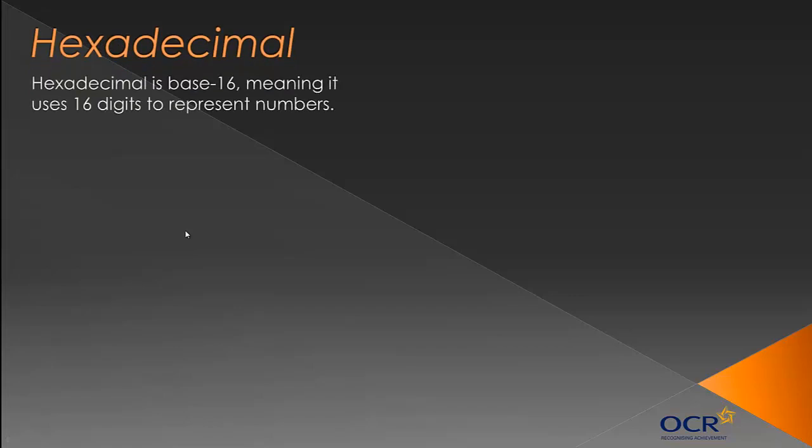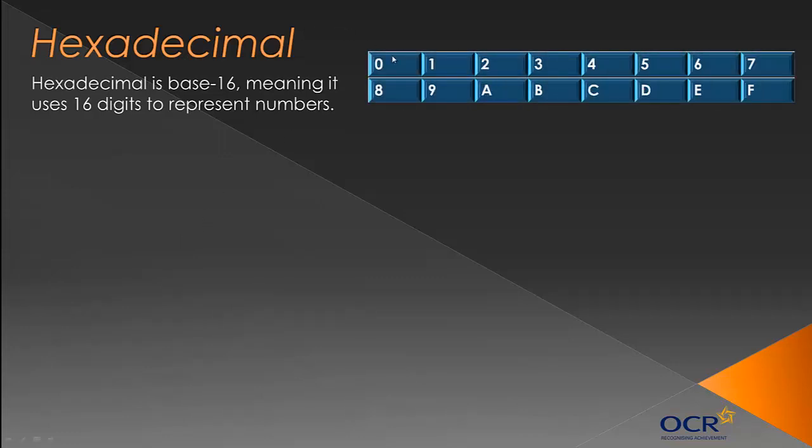Hexadecimal is a base 16 numbering system, meaning it has 16 digits to represent every number possible. Instead of two digits in binary and ten in decimal, it has 16. We use zero to nine as the first ten digits, then use the first six letters of the alphabet. A equals 10, B equals 11, C equals 12, D equals 13, E equals 14, and F equals 15. You've got to remember it goes up to 15 because we have 16 digits in total and zero counts as a digit.